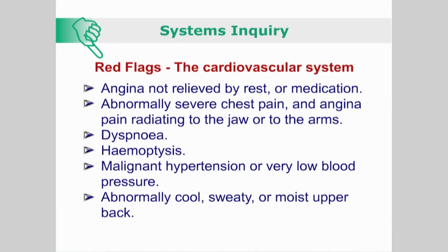Red flags relating to the cardiovascular system include angina not relieved by rest or medication. This also includes irregular angina patterns, as in elderly females and diabetics. Abnormally severe chest pain and angina radiating to the jaw or to the arms. Dyspnea, hemoptysis — that is the coughing of blood — malignant hypertension or the opposite, very low blood pressure. Abnormally cool, sweaty or moist upper back.